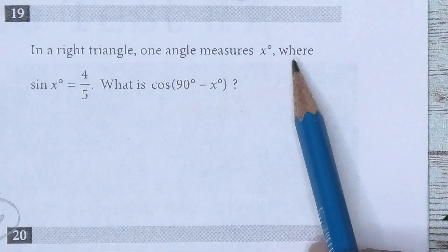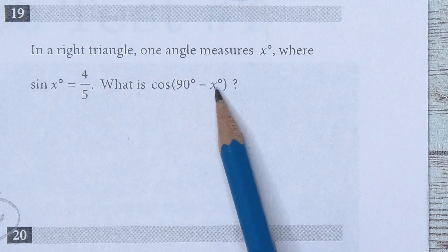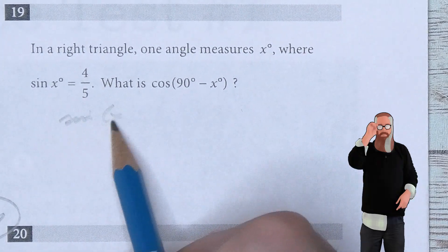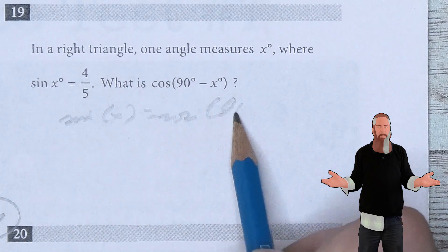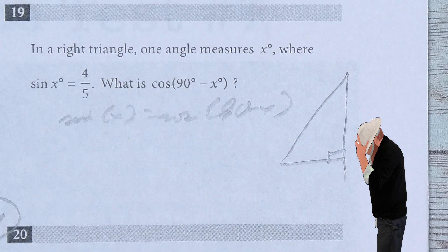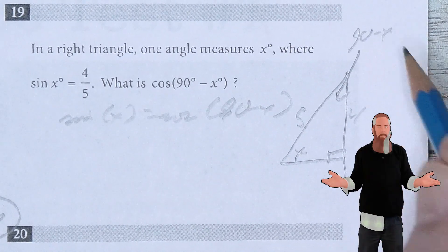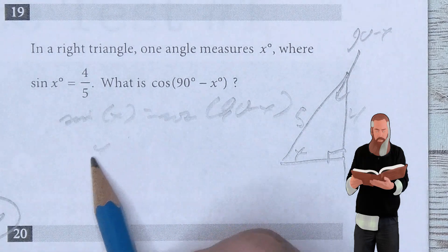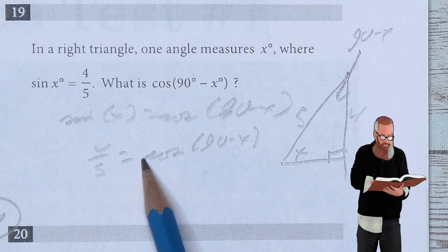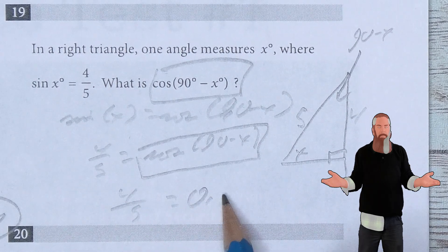In a right triangle, one angle measures x degrees where sine of x degrees equals 4 over 5. What is the cosine of 90 minus x degrees? This is the complementary angle relationship: sine of x equals cosine of 90 minus x. Visualizing the right triangle, with the angle of x degrees, the known values are 5 and 4, and the complementary angle is 90 minus x. So cosine of 90 minus x equals 4 over 5, or 0.8.